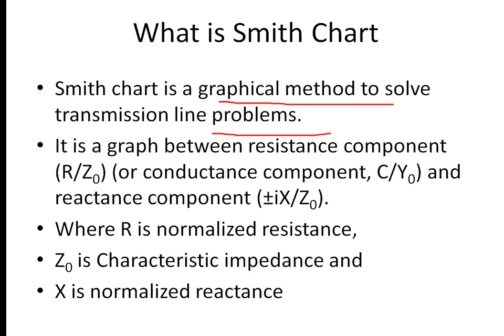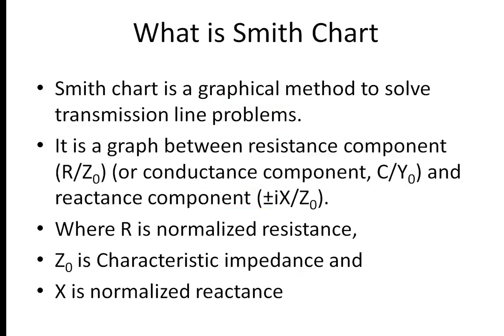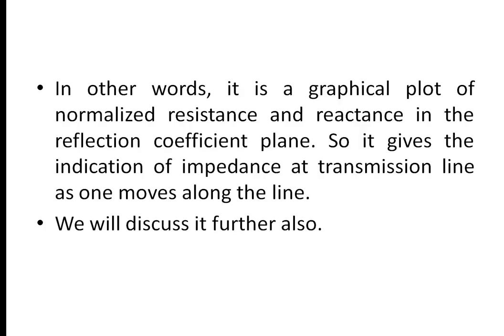It is a graph between resistance component R by Z naught and reactance component iota X by Z naught, or it is a graph between conductance component or reactance component. Here R is normalized resistance, Z naught or Z zero is characteristic impedance, and X is normalized reactance. In other words, it is a graphical plot of normalized resistance and reactance in the reflection coefficient plane, giving the indication of impedance at a transmission line as one moves along the line.